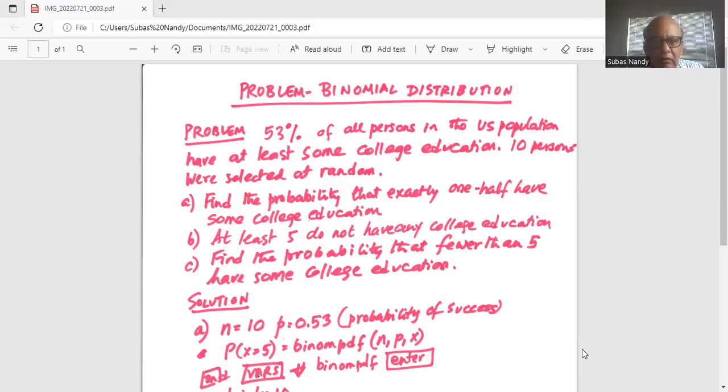Part B: find the probability that at least five do not have any college education. And part C: find the probability that fewer than five have some college education.